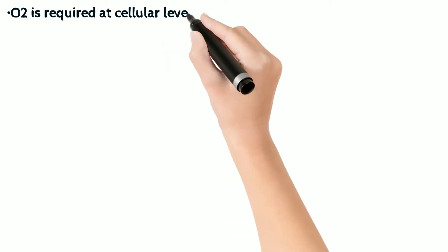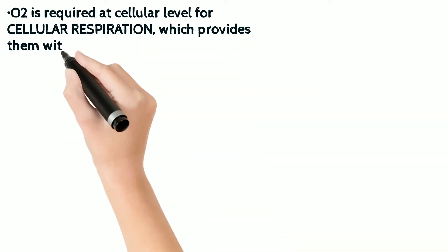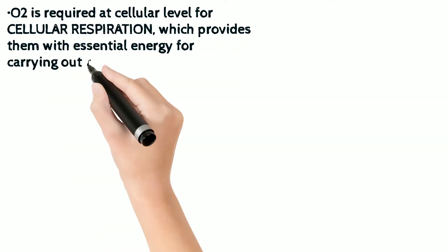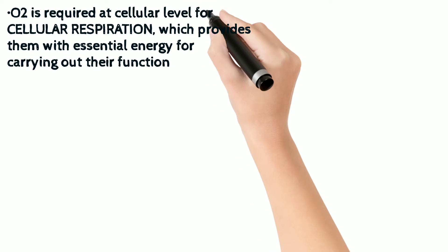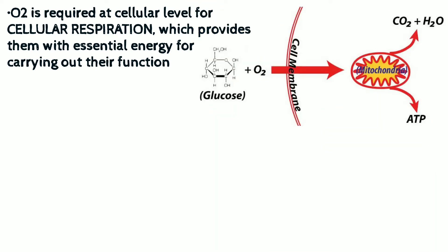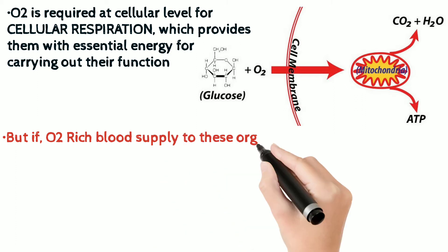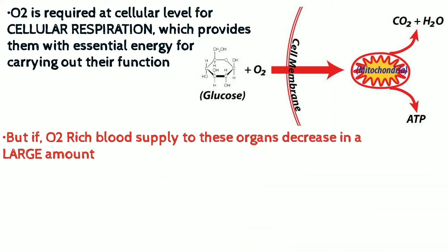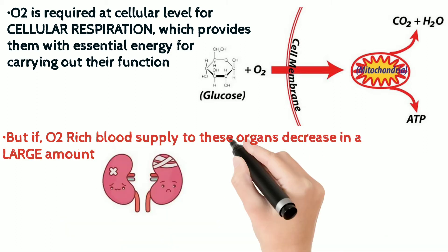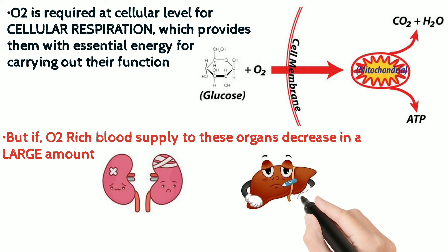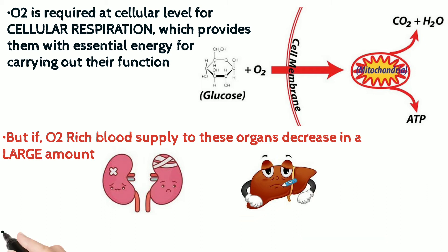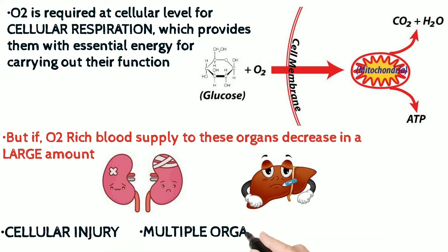As we all know, oxygen is required by our cells for performing cellular respiration, which is responsible for providing essential energy to carry out bodily functions. But if oxygen-rich blood supply decreases in a large amount, it might lead to severe consequences like cellular injury, multiple organ failure, and might even cause death in certain conditions.